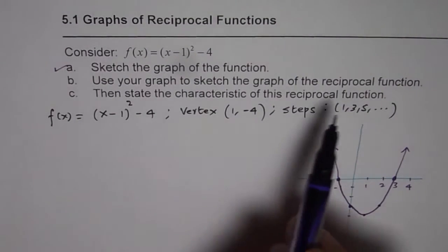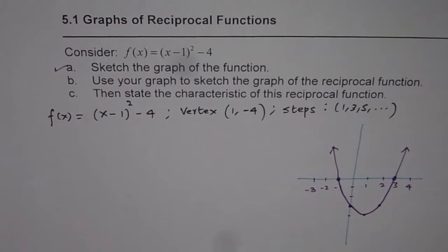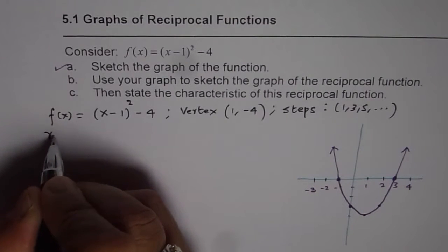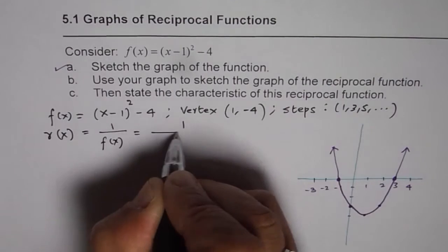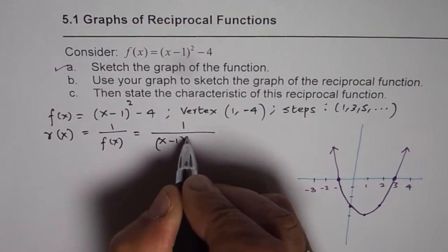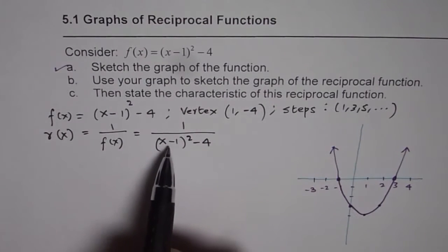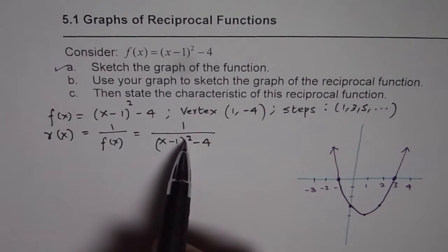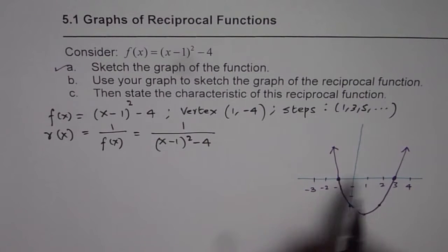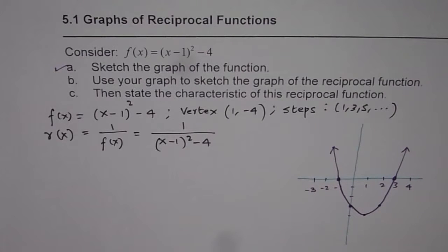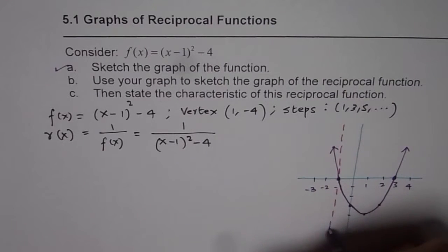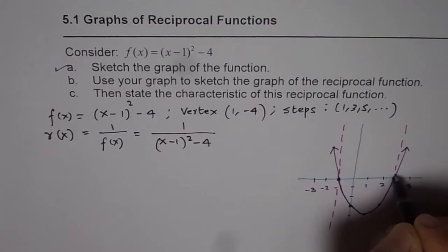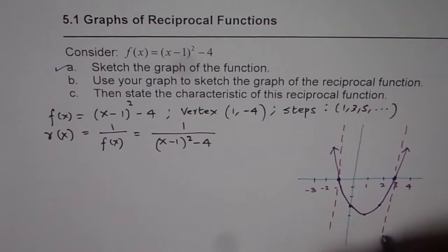Now we need to use the graph to sketch the reciprocal of the function. Let's always begin with the x-intercepts. The reciprocal is r(x) = 1/f(x), which equals 1/[(x - 1)² - 4]. Wherever this function has a zero, we will get 1/0, and 1/0 is not defined.